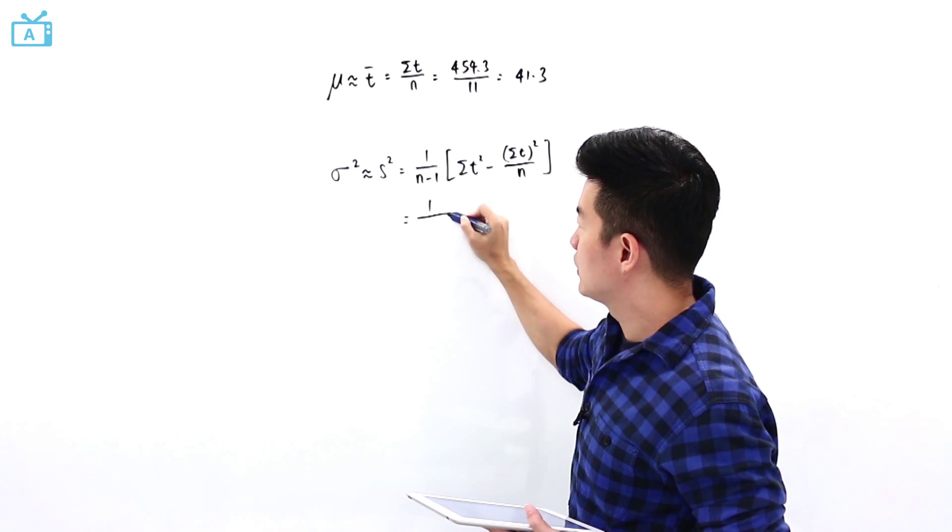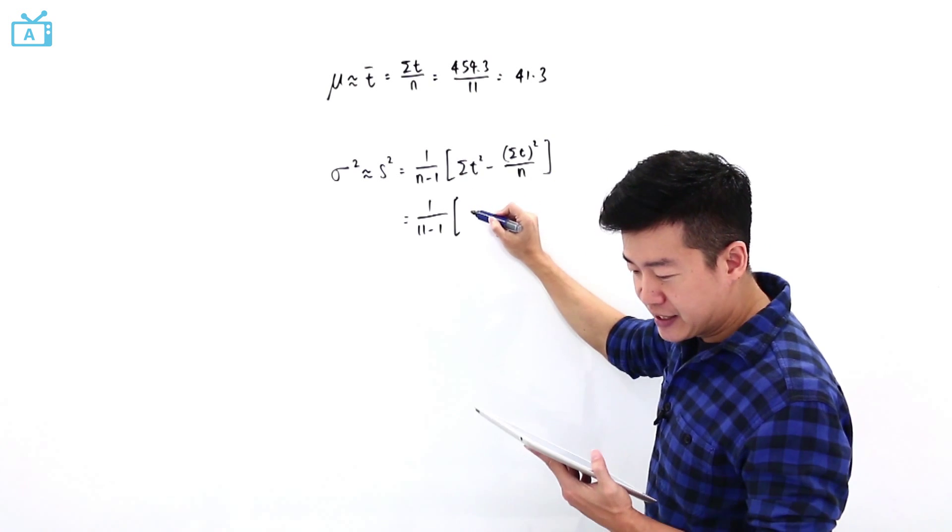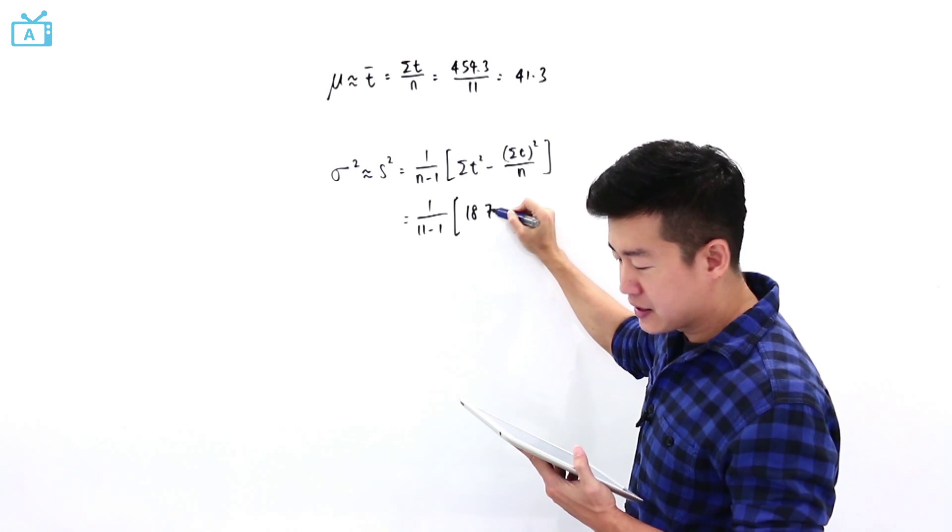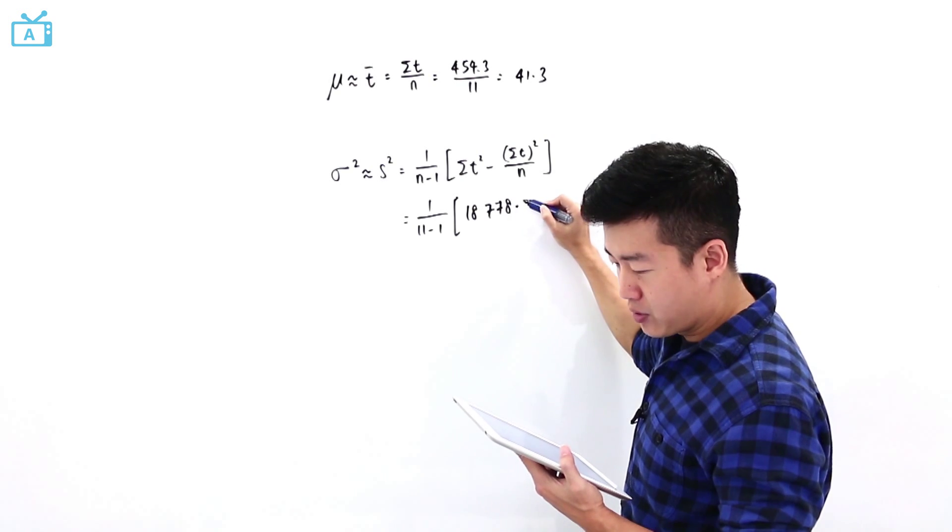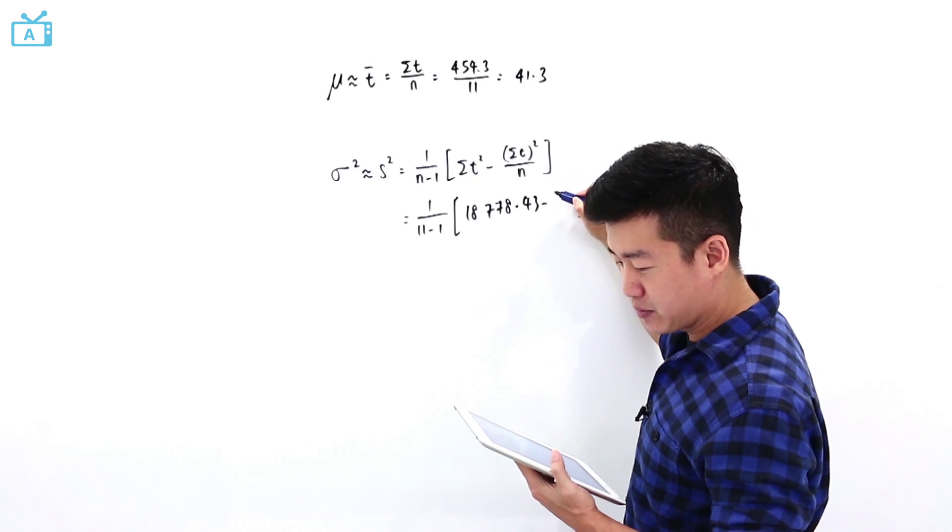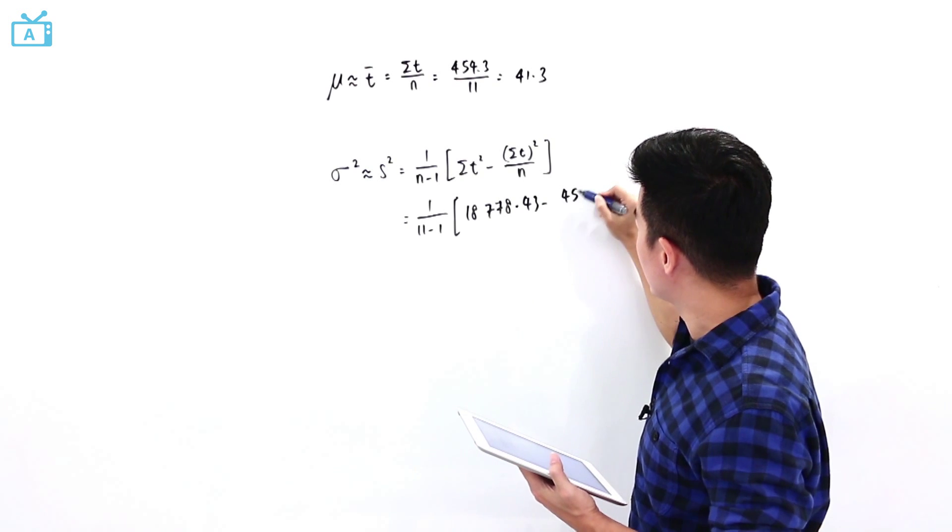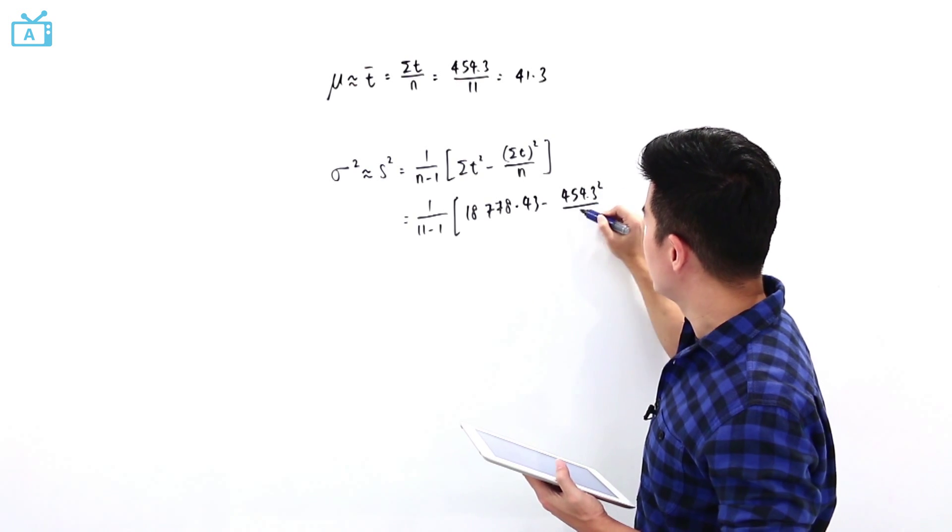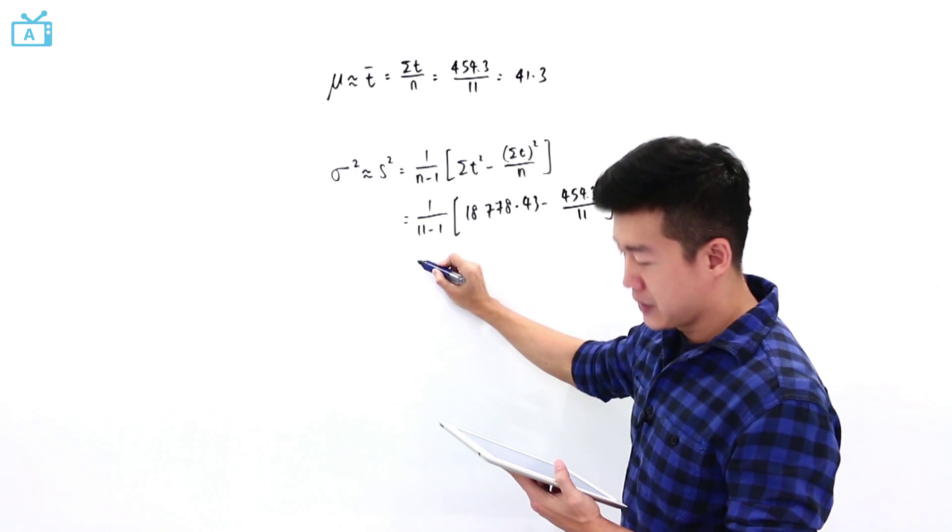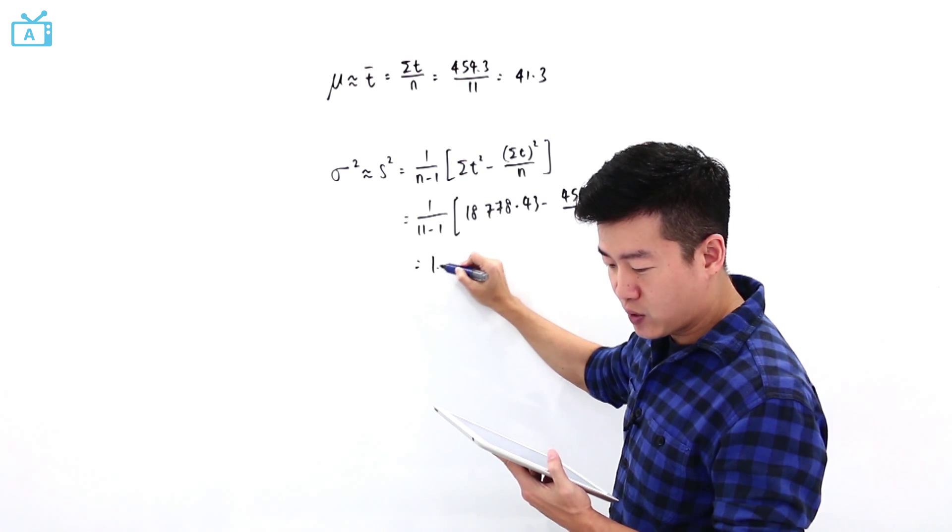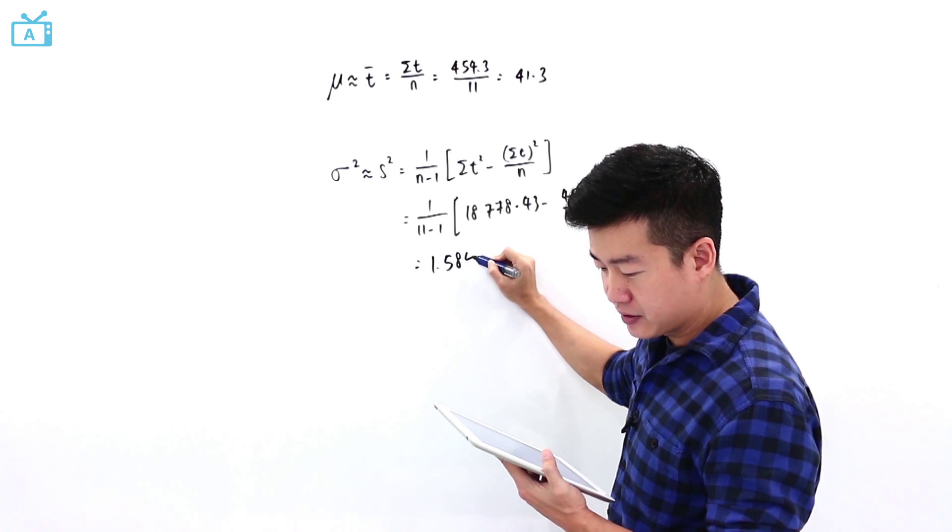And it is 1 over 11 minus 1. Summation of t-square is 18778.43 minus summation of t, this is 454.3 square divided by 11. If I were to calculate this, this is 1.584.